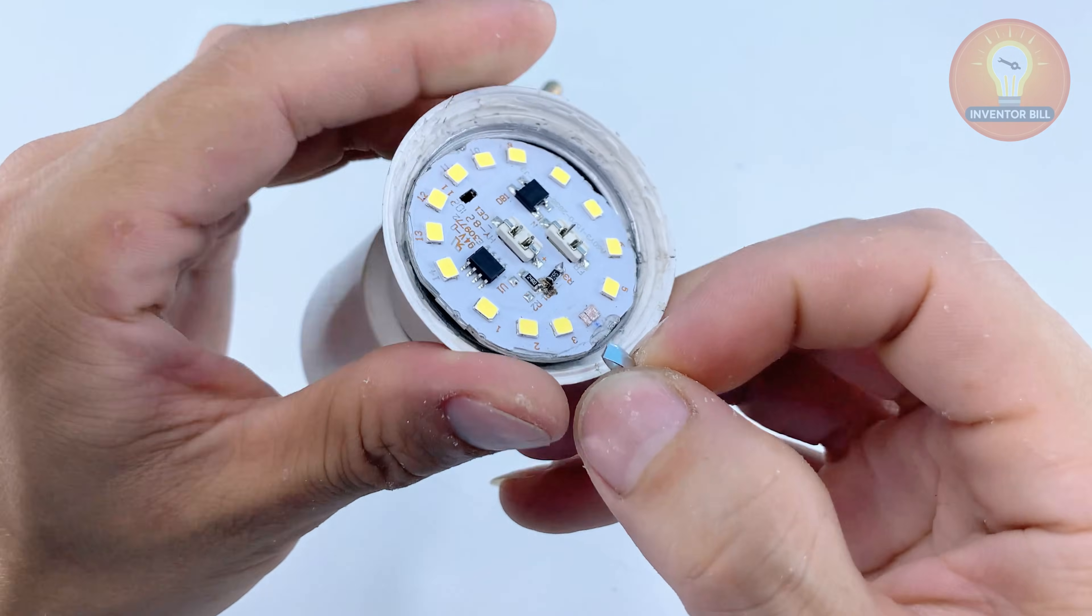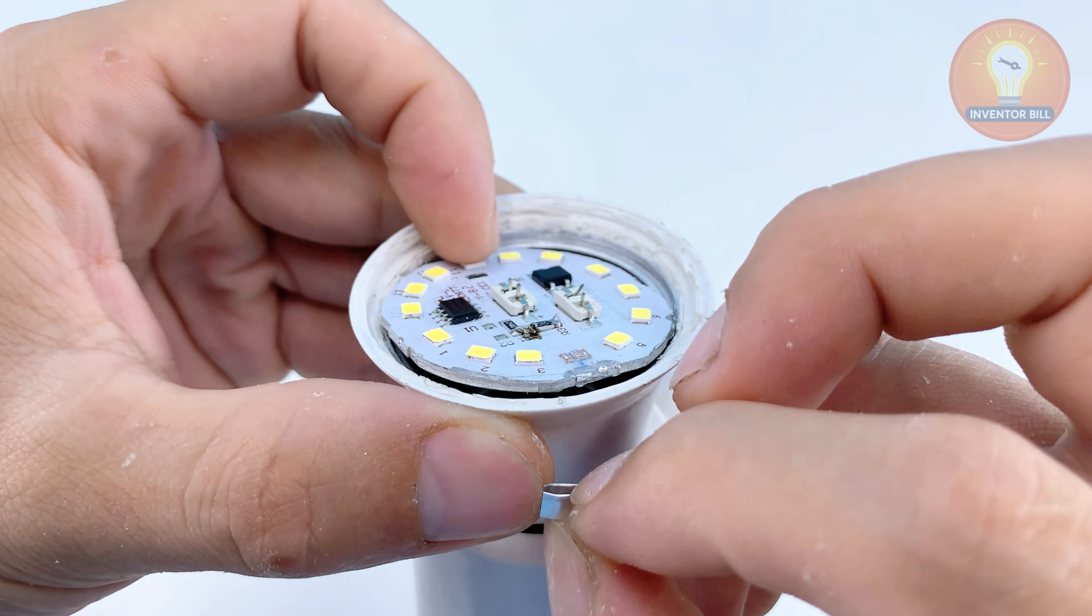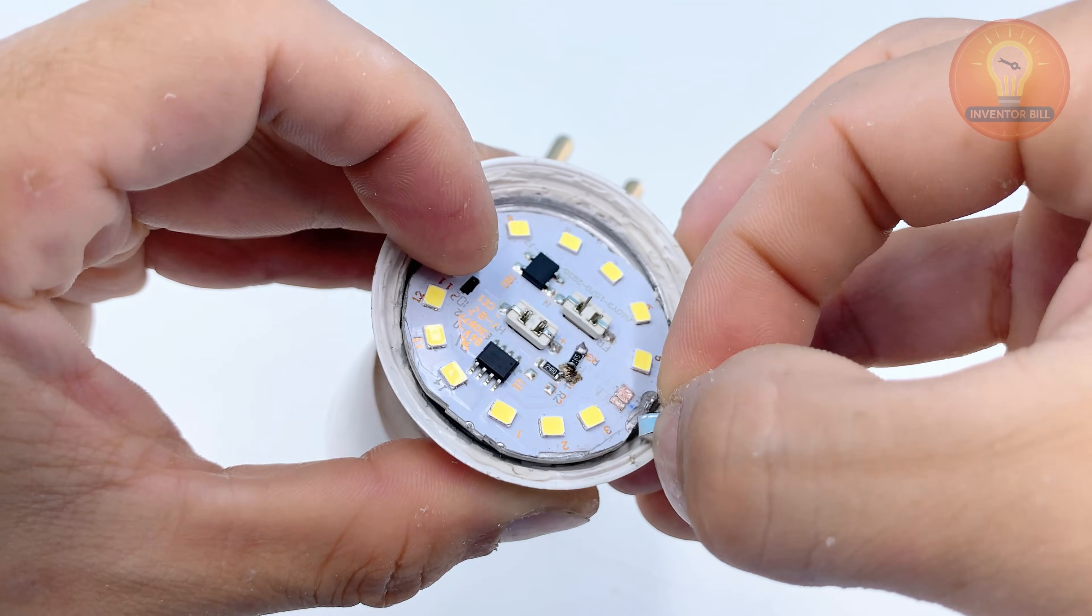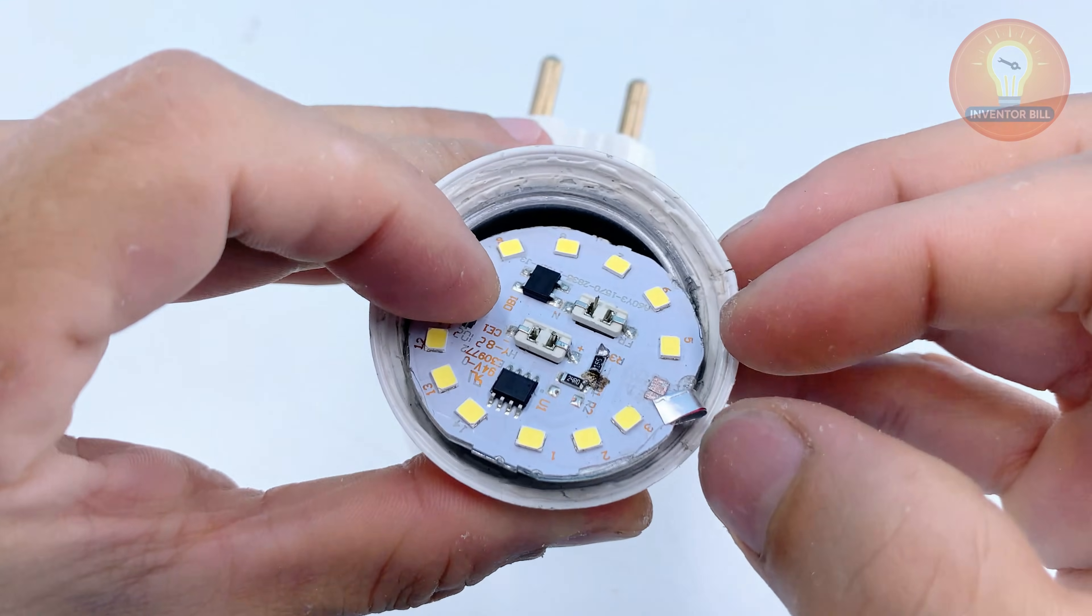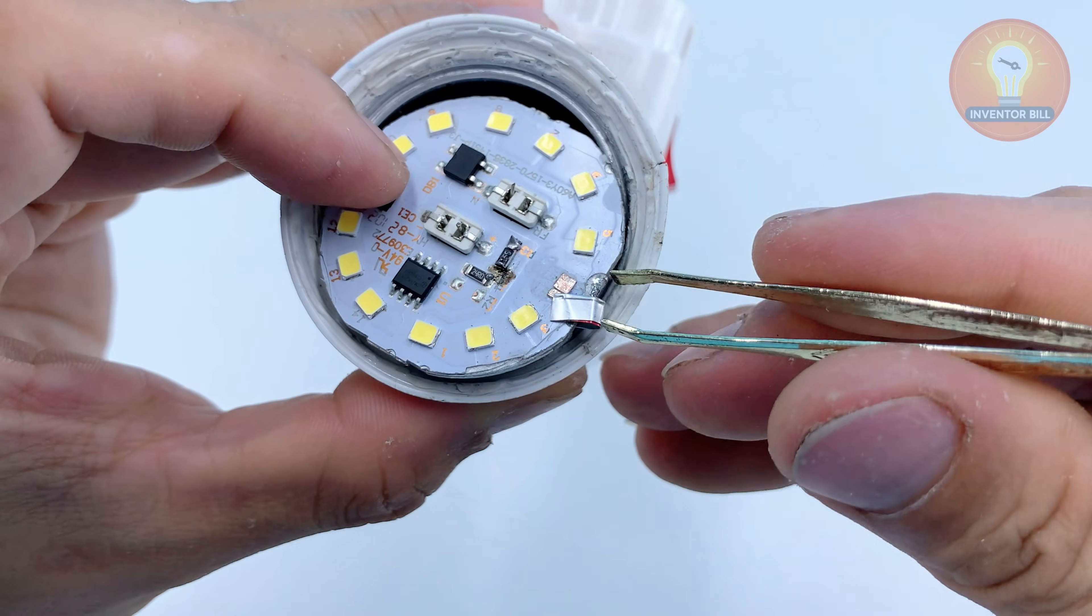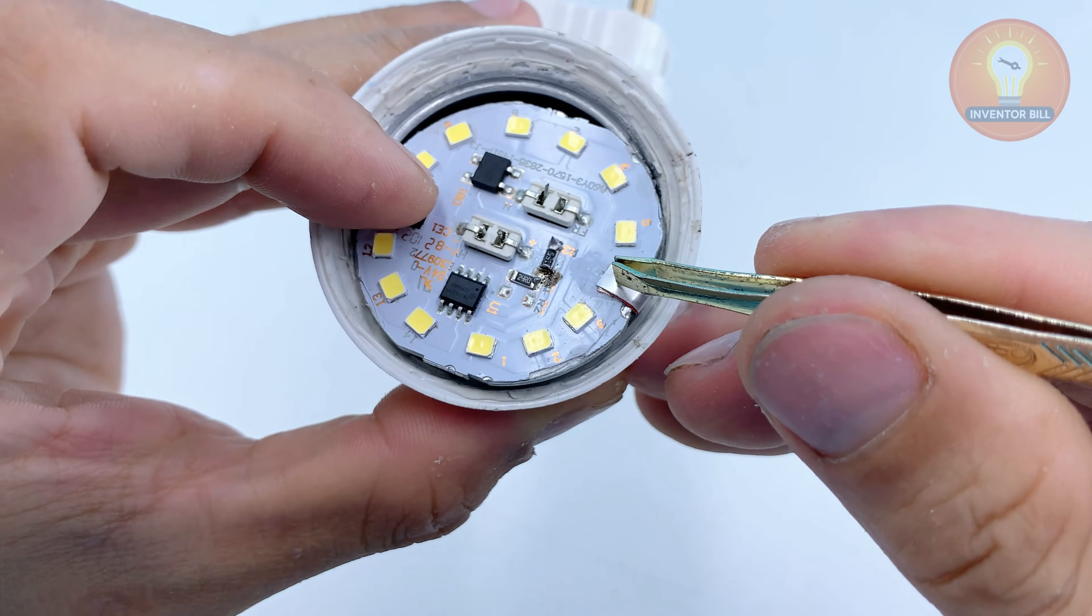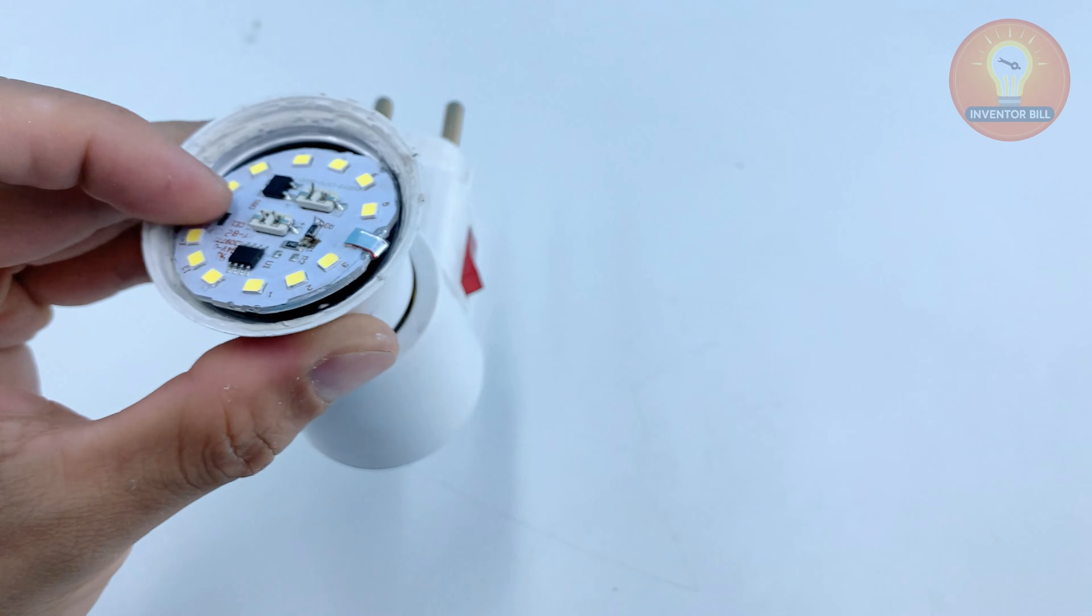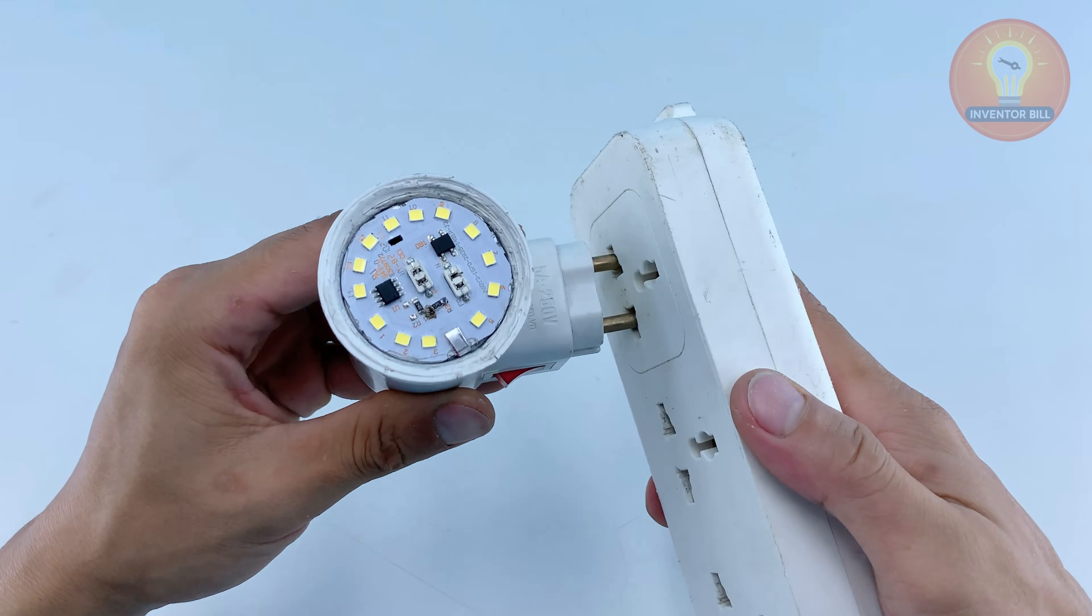Start by placing the round circuit board back into the base of the bulb. Hold the metal strip so it makes firm contact with the spot where the damaged LED used to sit. This helps bridge the connection that was lost when the chip failed. Once the strip is sitting flat and touching the metal pad, press the board back into its original position.